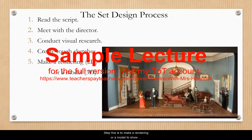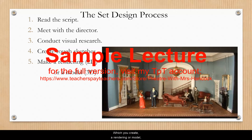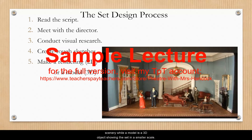Step five is to make a rendering or a model to show the director your final design for the show and to gain their approval. What you create — a rendering or a model — is largely up to the designer and what they are comfortable with. A rendering is merely a 2D image or drawing of the scenery, while a model is a 3D object showing the set in a smaller scale.